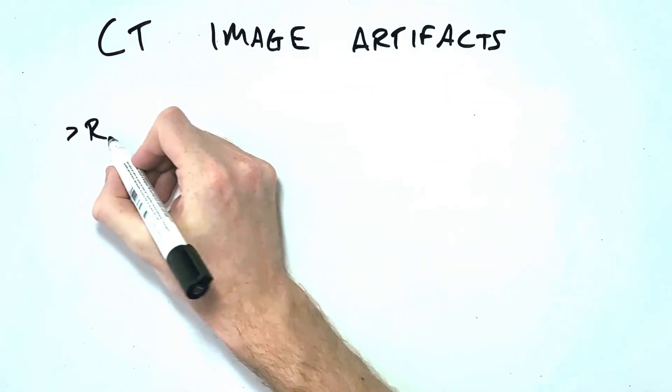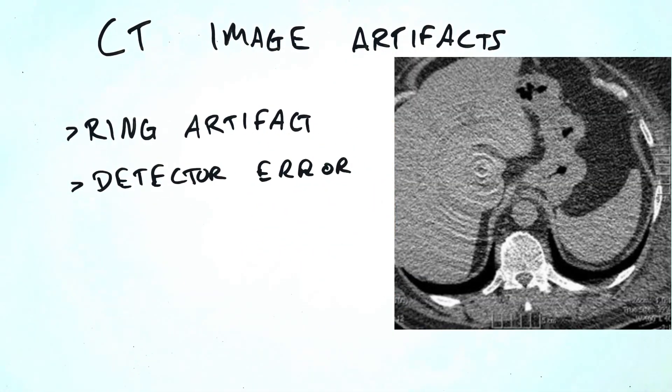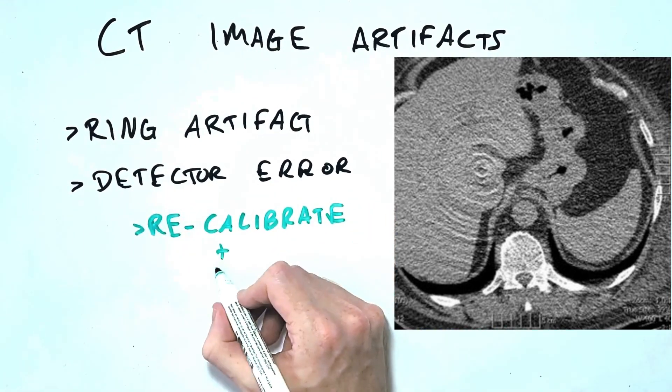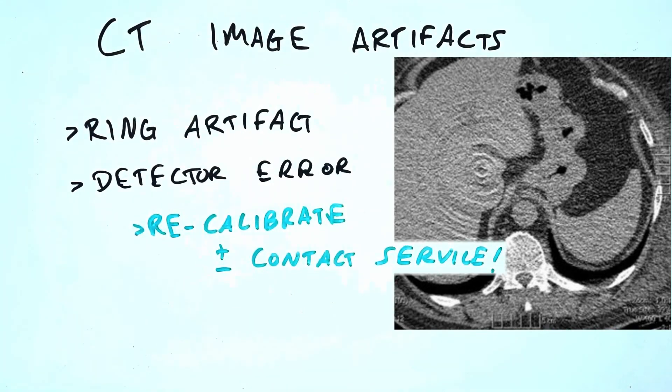Finally you may see a ring artefact which looks like ripples on a pond. This is caused by a detector issue and can sometimes be fixed by redoing your calibrations. However, sometimes this type of artefact will require the attention of a service engineer.